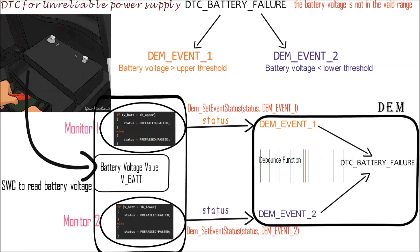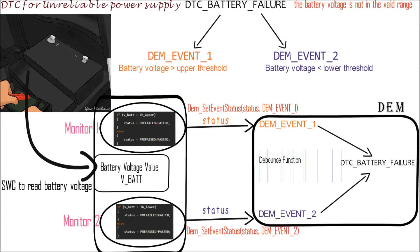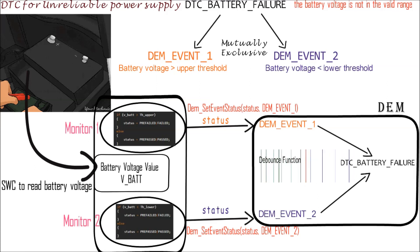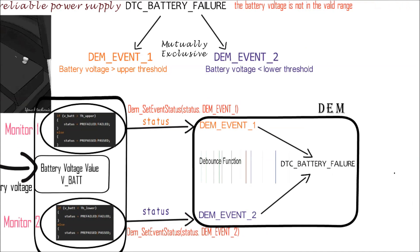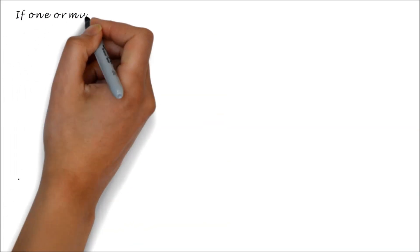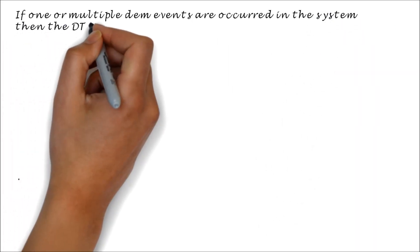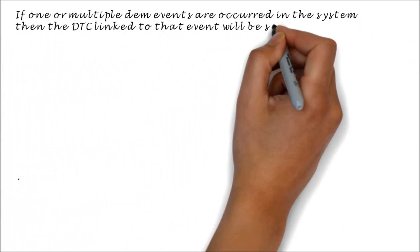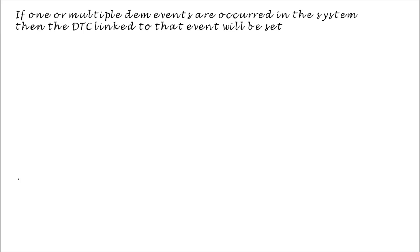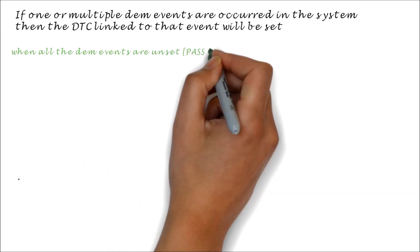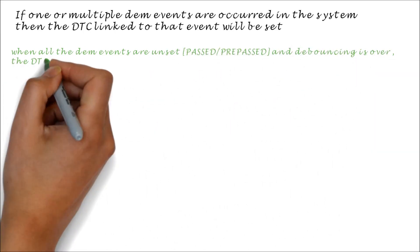If DEM event 1 alone has occurred, the DTC will still be set. In this example, the DEM events are mutually exclusive — DEM event 1 and DEM event 2 cannot occur simultaneously — but this may not be the case in all use cases. If one or multiple DEM events are occurring in the system, then the corresponding DTC linked to that DEM event will be set. Only when all DEM events are no longer occurring and debouncing is complete will the DTC be healed.